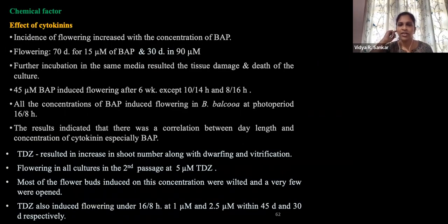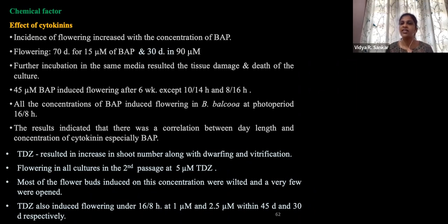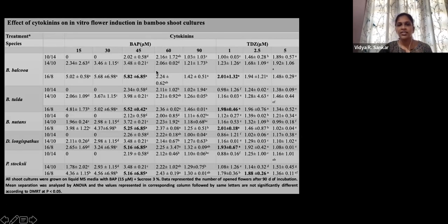For cytokinin, BAP at 15 micromolar induced flowering by the 70th day of inoculation, whereas 90 micromolar BAP gave results within 30 days, but both are associated with a photoperiod of 16:8 hours. TDZ also induced flowering at a concentration of 55 micromolar at the second passage. However, high concentrations of cytokinin adversely affected normal growth, abnormally reducing the length of elongated shoots into very small ones and causing newly formed buds to tend towards floral buds.